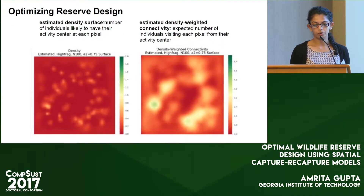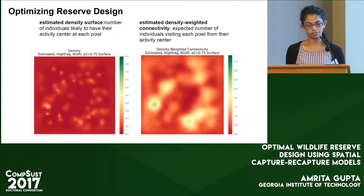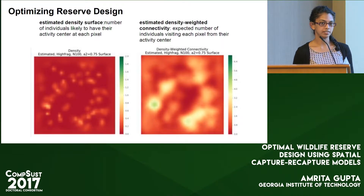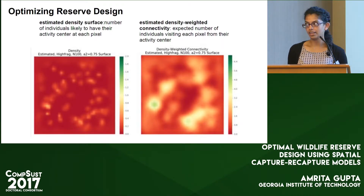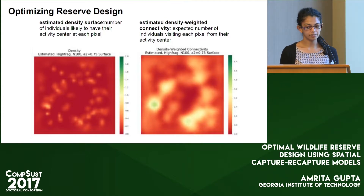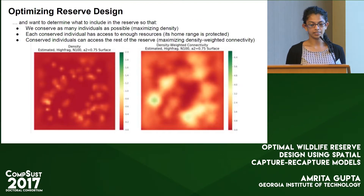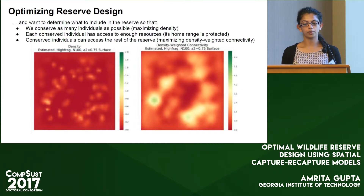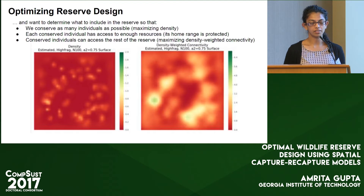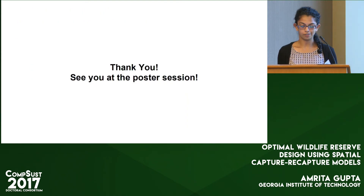Our goal with this work was to augment this model with decision support — to either maximize the number of individuals in a reserve, giving us an estimated density surface like the one on the left, or to also incorporate connectivity considerations, giving a density-weighted connectivity map estimated on the right. We would then decide which parts of the landscape to include in the reserve to maximize either density alone, or both density and connectivity. The main question we were looking at was how working with these estimates affects the quality of our optimization.